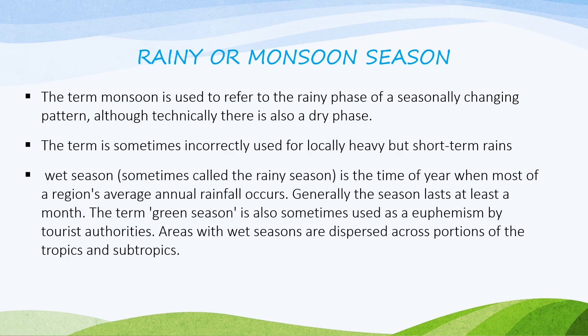The term monsoon is used to refer to the rainy phase of a seasonally changing pattern, although technically there is also a dry phase. The term is sometimes incorrectly used for locally heavy but short-term rains. The wet season, sometimes called the rainy season, is the time of year when most of the region's average annual rainfall occurs. Generally, the season lasts at least a month. The term 'green season' is also sometimes used as a euphemism by tourist authorities. Areas with wet seasons are distributed across the tropics and subtropics.